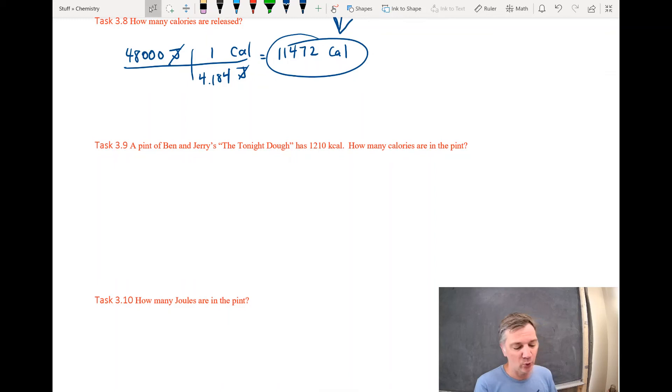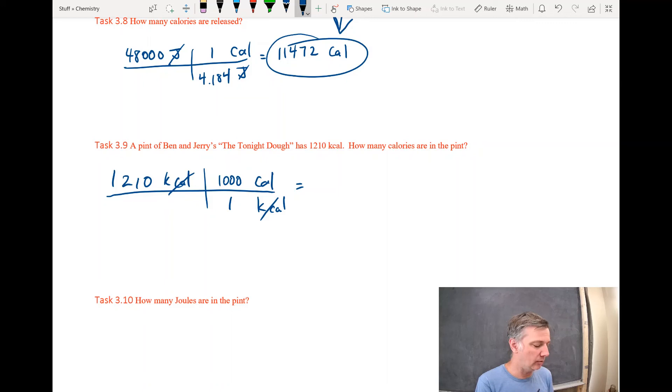A pint of Ben and Jerry's The Tonight Dough has 1,210 kilocalories. Again, true statement. I looked it up. That's my favorite ice cream. So I've got 1,210 kilocalories. Now, they're asking us how many calories would that be? So I'm going to do a conversion, and I'm going to go from kilocalories. So I'm going to cross those out, and I'm going to pick up calories. As it turns out, there are 1,000 calories in 1 kilocalorie. So again, I've got 1,210 times 1,000, which is a really big number. So that ends up being 1,210,000 calories. That's a lot of calories. Yikes. That's in the whole pint, though.